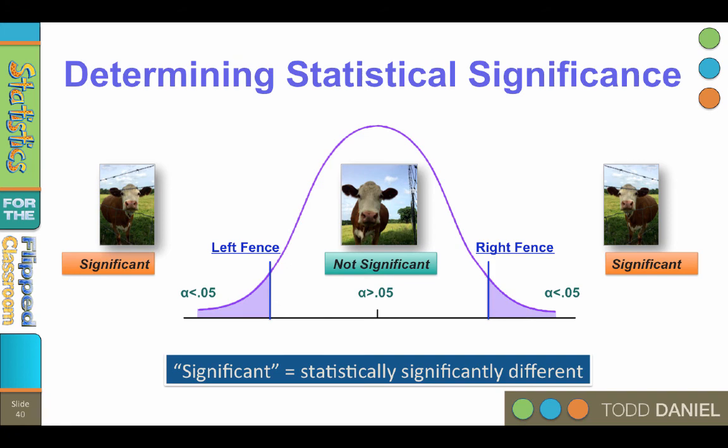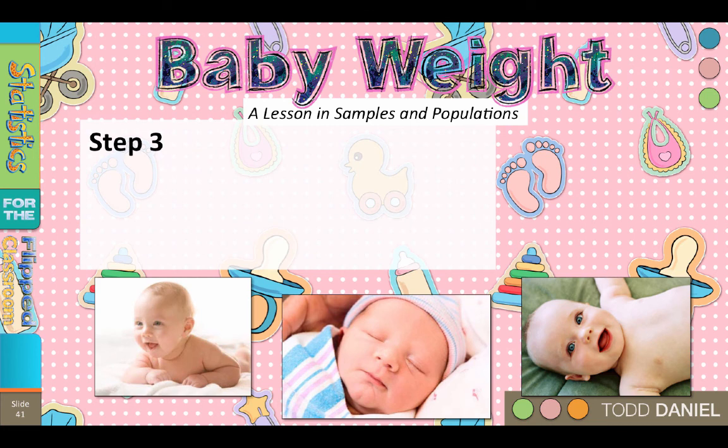For our example, using baby weight, the alpha level is 0.05. We are using a two-tailed test. So if we had a large enough sample, our critical value would be positive or negative 1.96. Now remember that number 1.96. It is the critical value or cutoff score that we will learn about with a z-test.